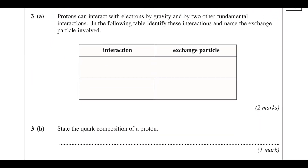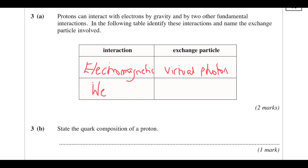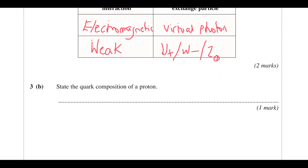Moving on to question 3 — still more particle physics. Protons can interact with electrons by gravity and two other fundamental interactions: identify these and name the exchange particle. One is electromagnetic — they're both charged — and the exchange particle is a virtual photon. Another is the weak interaction, since they are both fermions, and the exchange particle would be a W plus, W minus, or Z boson. The quark composition of a proton is up, up, down.